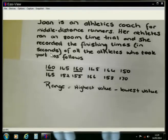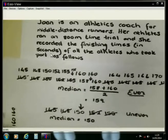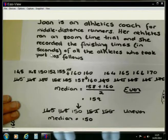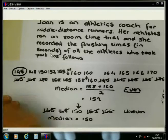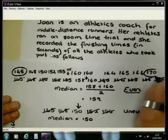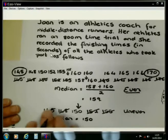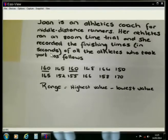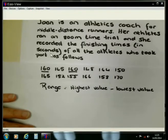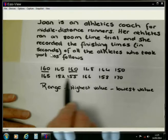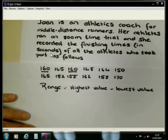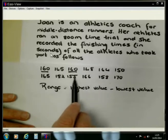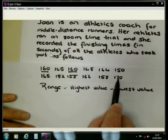When we were determining the median, we first ordered the numbers from the smallest to the highest, and we saw that the smallest number is 145 and the biggest number is 170. If you have arranged it, then you work with those arranged values. But you don't have to arrange it to get the range — you can simply scrutinize to see what is the highest value that appears in the data set, which is 170.